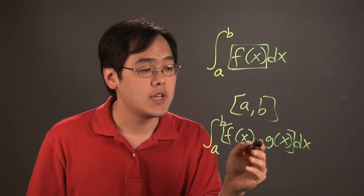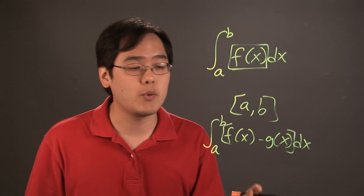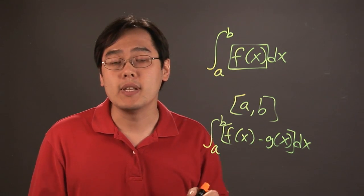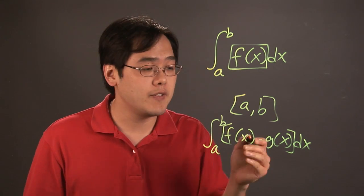f(x) will be the top curve, g(x) is the bottom curve. Basically what you do is you take the top function and subtract the bottom function, and then find the integral from there. It really depends on how involved the function is.